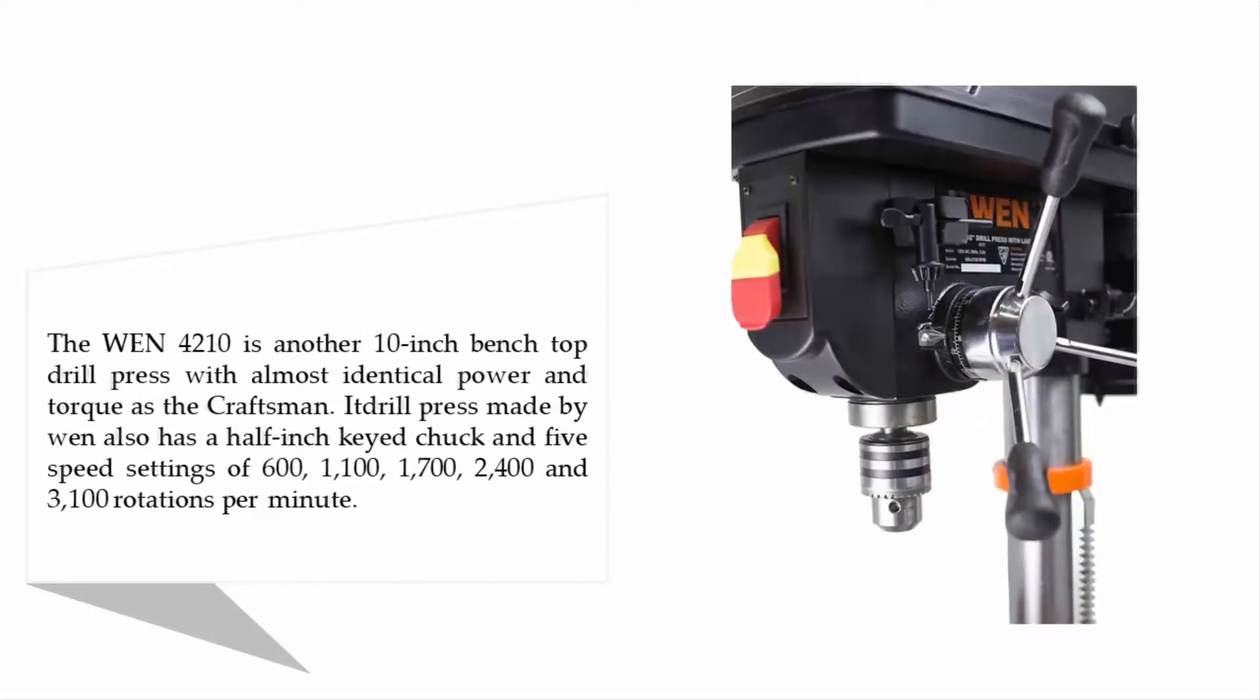The WEN 4210 is another 10-inch bench top drill press with almost identical power and torque as the Craftsman. This drill press made by WEN also has a half-inch keyed chuck and five speed settings of 600, 1100, 1700, 2400, and 3100 rotations per minute.